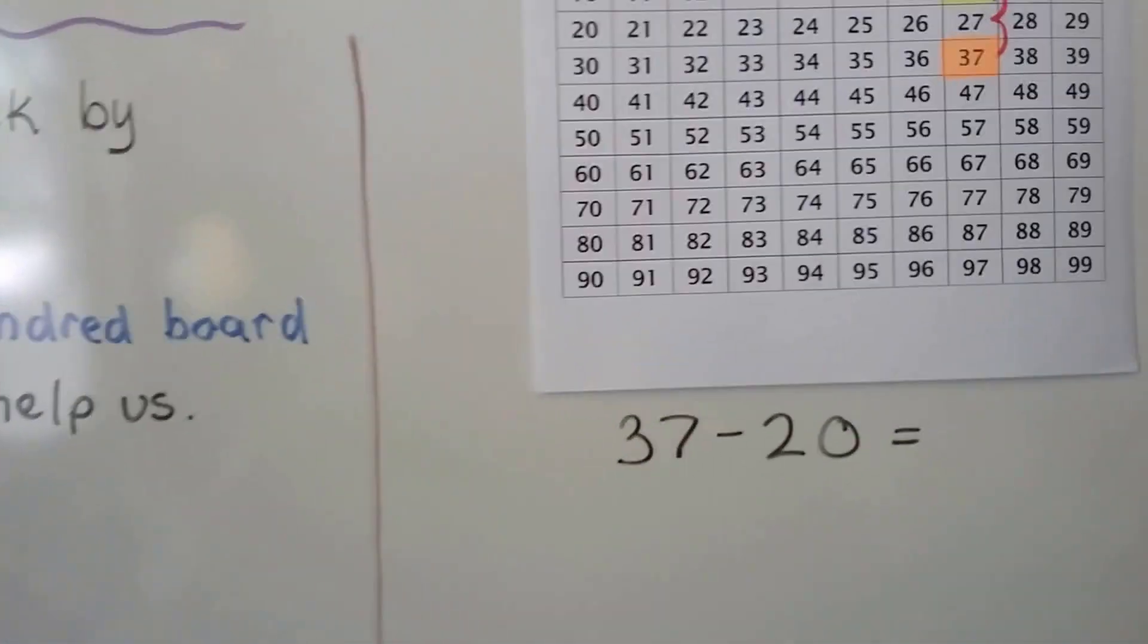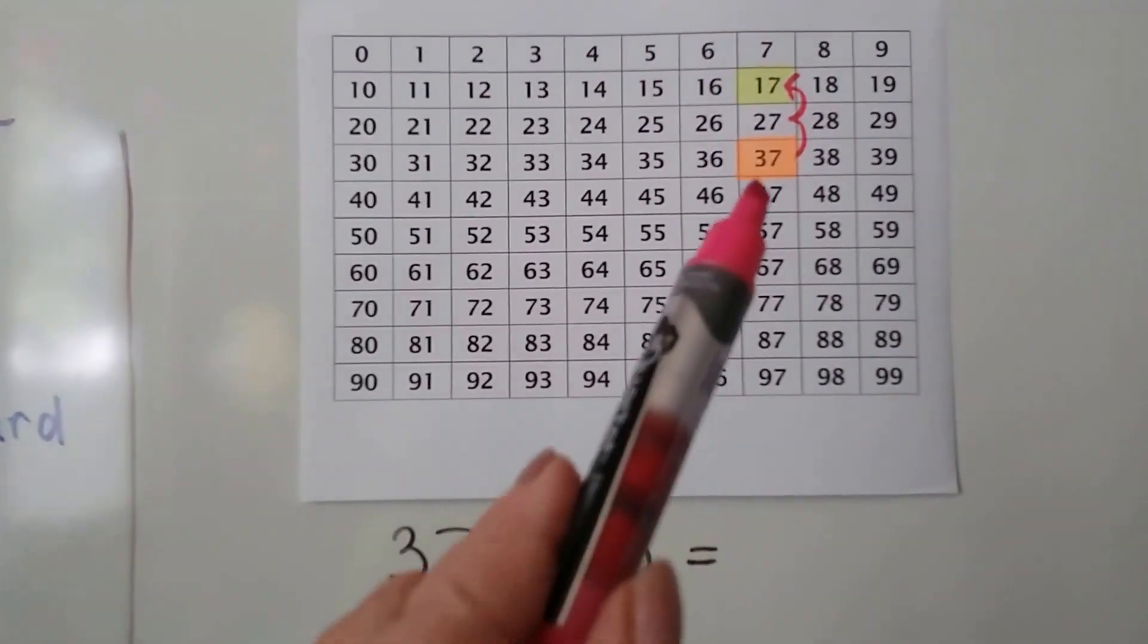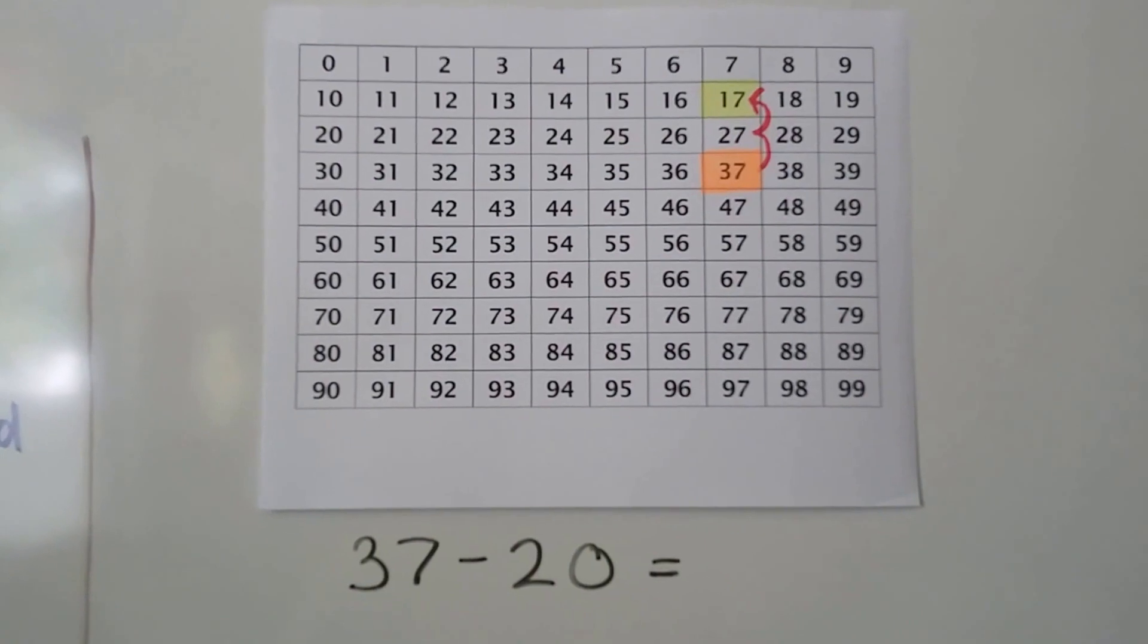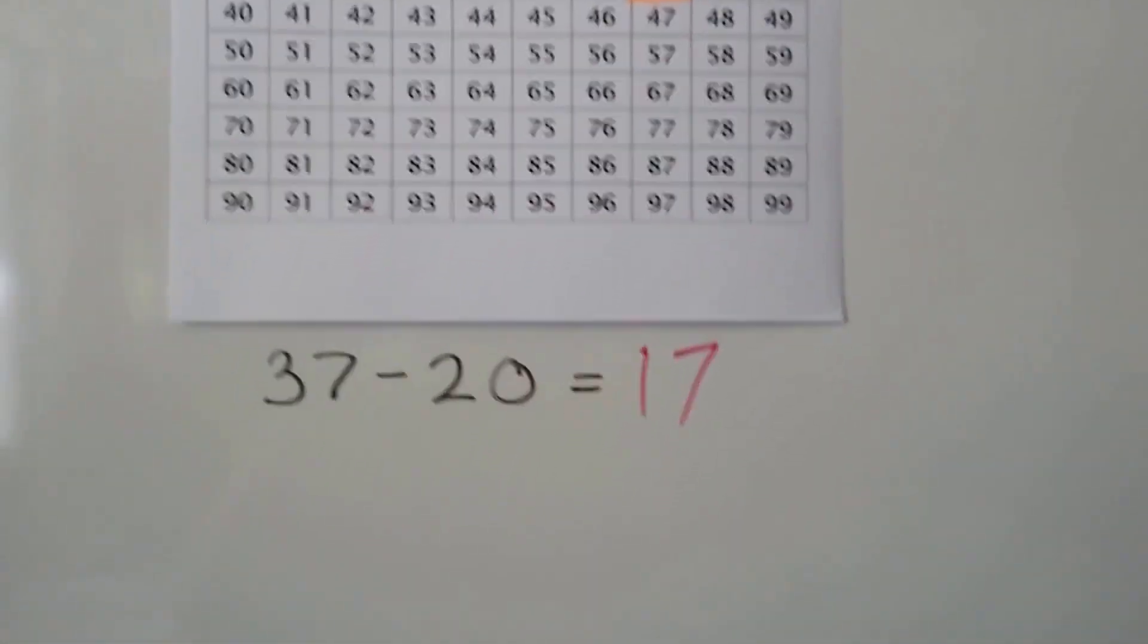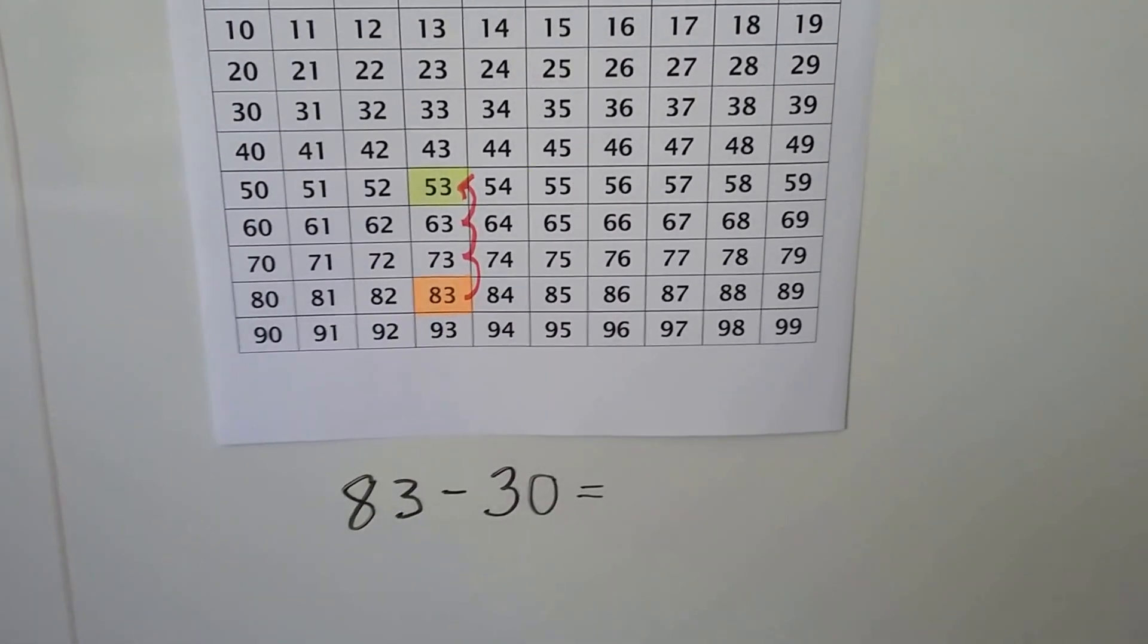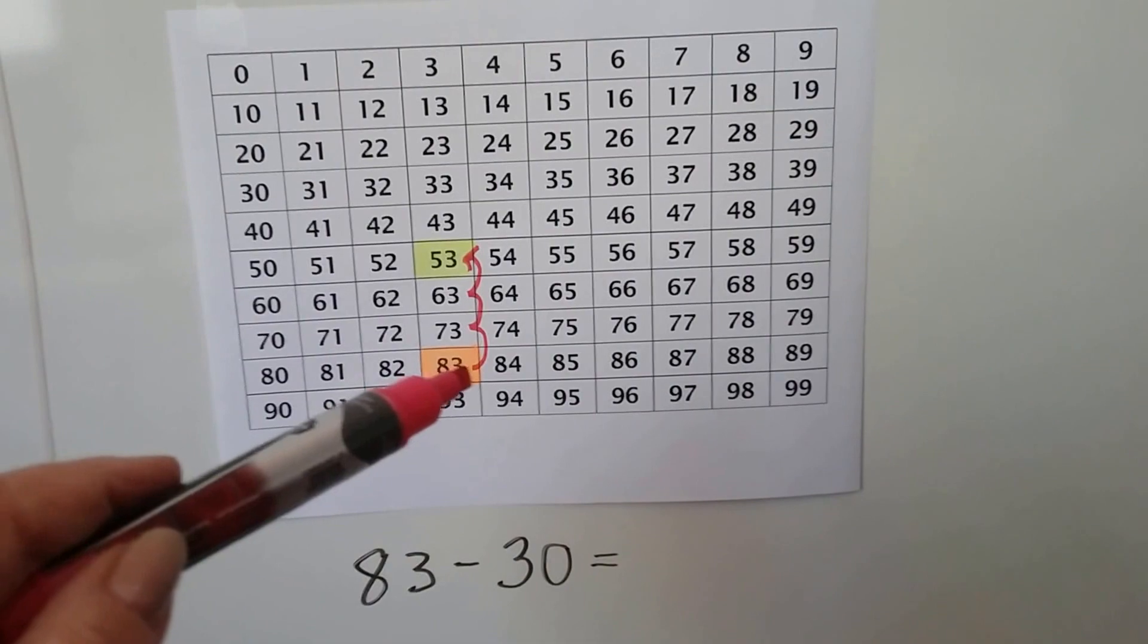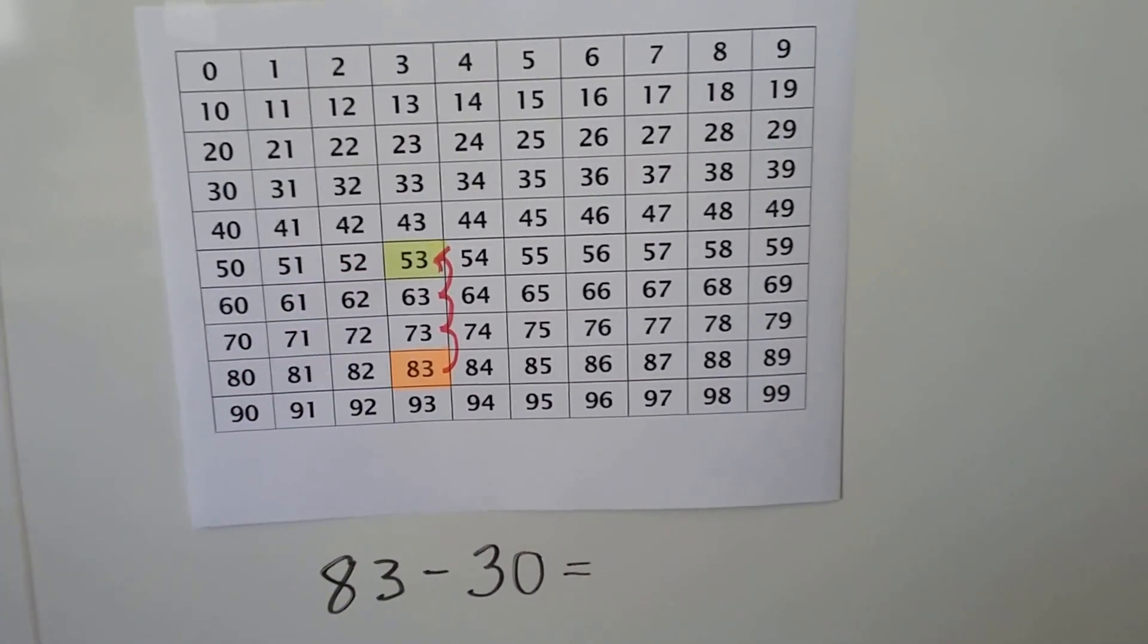Let's try this. 37 minus 20. We start at the 37, and we hop up two rows, 1, 2. That brings us to a 17. Let's try it again. 83 minus 30. We find the 83, and we're gonna hop back three tens. So that's three rows: 1, 2, 3. That brings us to 53.